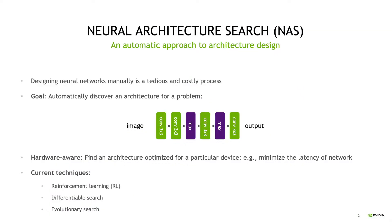Designing neural networks manually is a tedious and costly process as it often involves a lot of trial and error experiments. The goal of Neural Architecture Search, or NAS, is to automate the process of designing architectures. For example, in the case of image classification, the goal of NAS is to decide the best operations for each layer in the network.